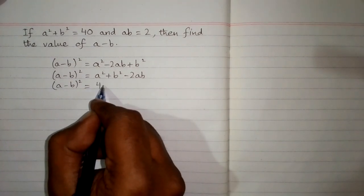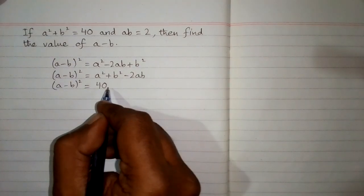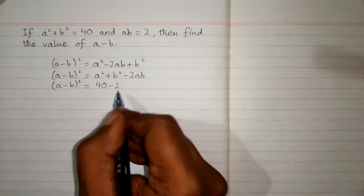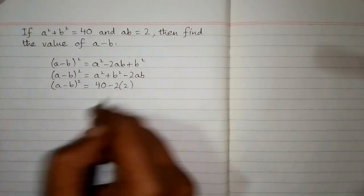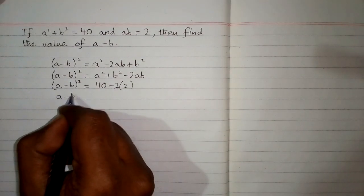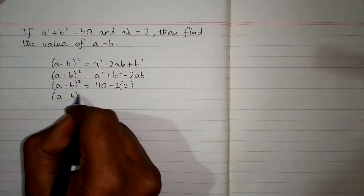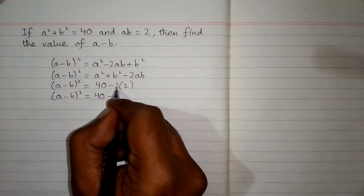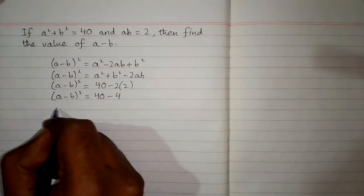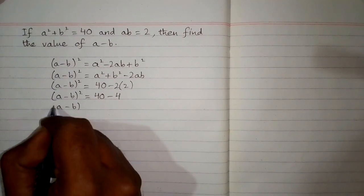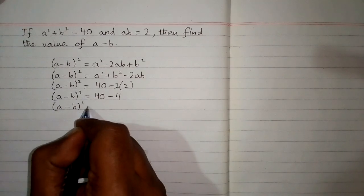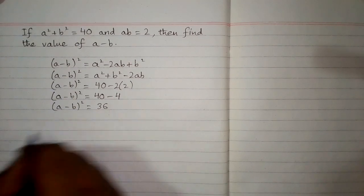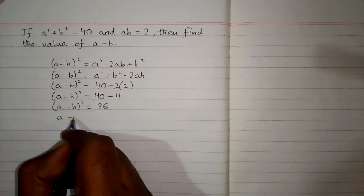We write 40, then minus 2, and since the value of ab is 2, we write 2 here. So a minus b whole square is equal to 40 minus 2 times 2, which is 4. Therefore, a minus b whole square is equal to 40 minus 4, which is 36.